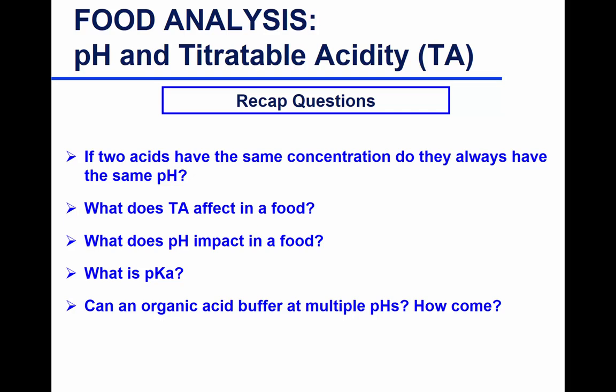Can an organic acid buffer at multiple pHs, and how come? When you have multiple carboxyl groups — and not all organic acids have multiple carboxyl groups — citric acid has three carboxyl groups, and each carboxyl group will have a different pKa. So yes, it will buffer at three different pHs. Acetic acid has one carboxyl group, so it will have one pKa, one buffering pH.